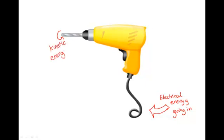Then at the other side coming out, we have kinetic energy because the drill bit is spinning round. So the electrical energy going in has been converted or transformed to kinetic energy going out. Our diagram here says electrical goes in, kinetic goes out.